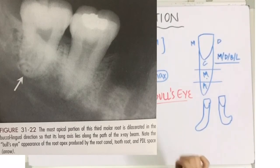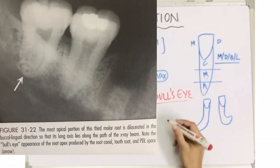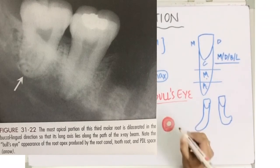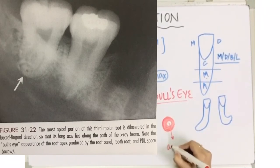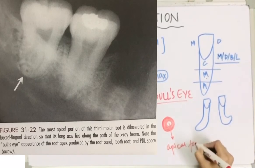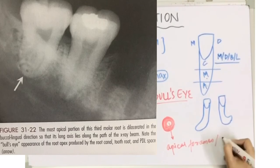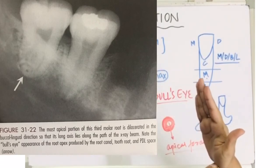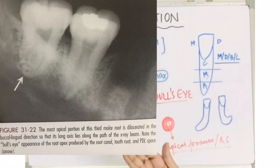There's the root apex and in the center there is radiolucency. Now this central radiolucency is because of the apical foramen and root canal. This apical foramen and root canal is a central radiolucency because we are taking the buccal and lingual section of the tooth in which the mesial and distal angulation would be clear.